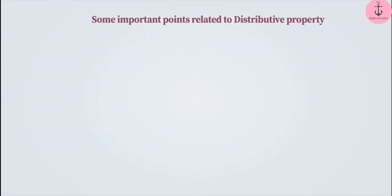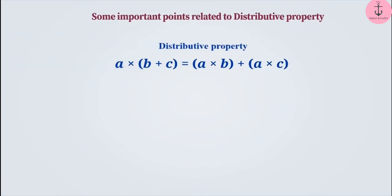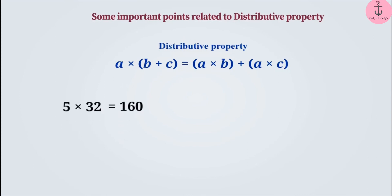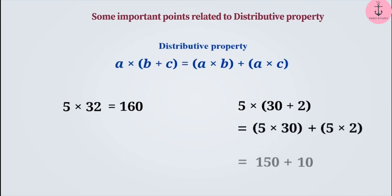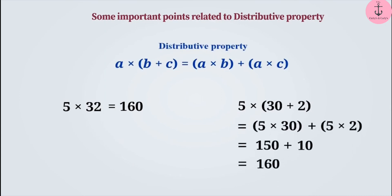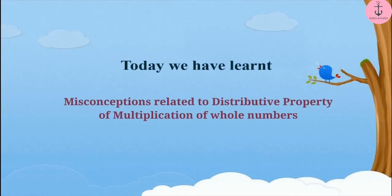Some important points related to distributive property: sometimes there is no correct understanding of the distributive property, or it is just considered as a rule, so it is not applied to simplify multiplication. In daily life, we come across many situations where we can use the distributive property to multiply two numbers without manually multiplying them on paper. That is why this is an important property. Today we have seen some misconceptions related to the distributive property of multiplication of whole numbers.